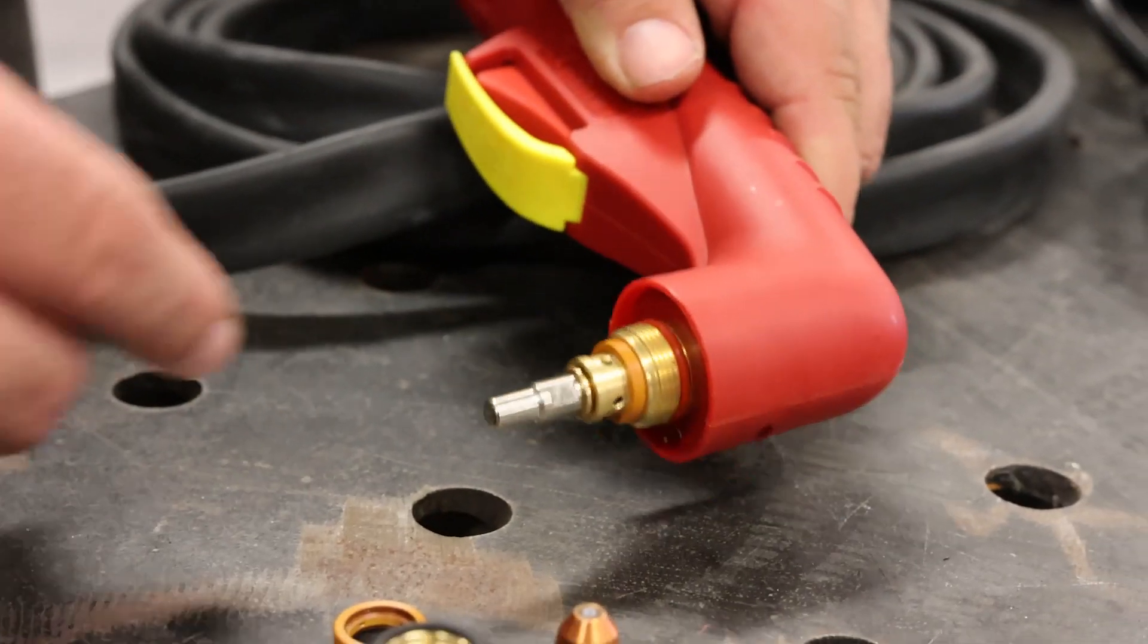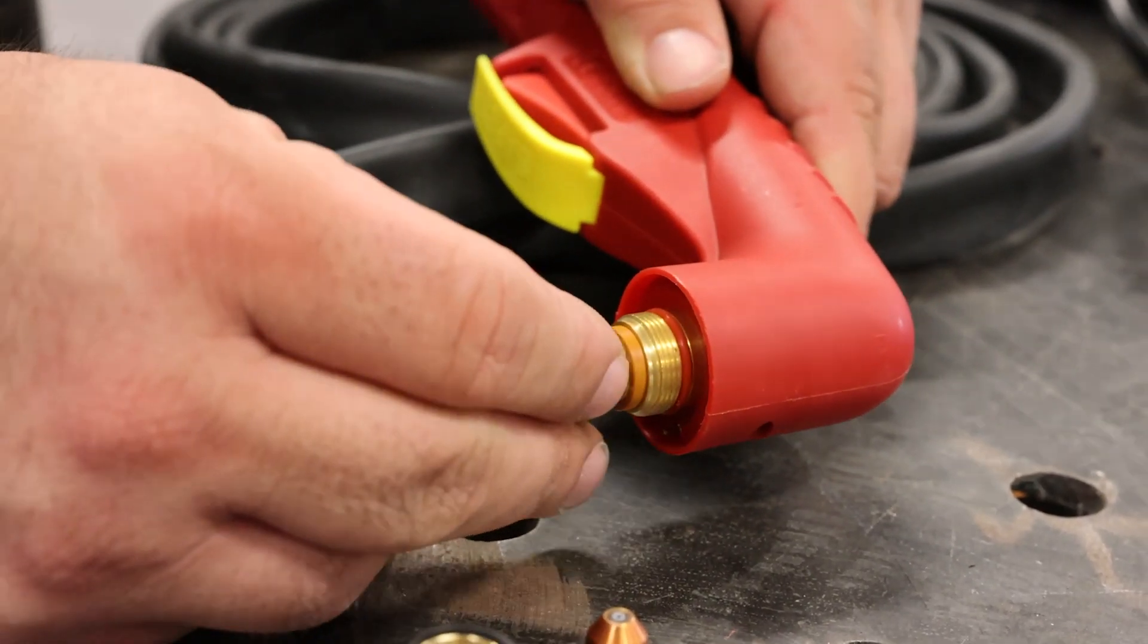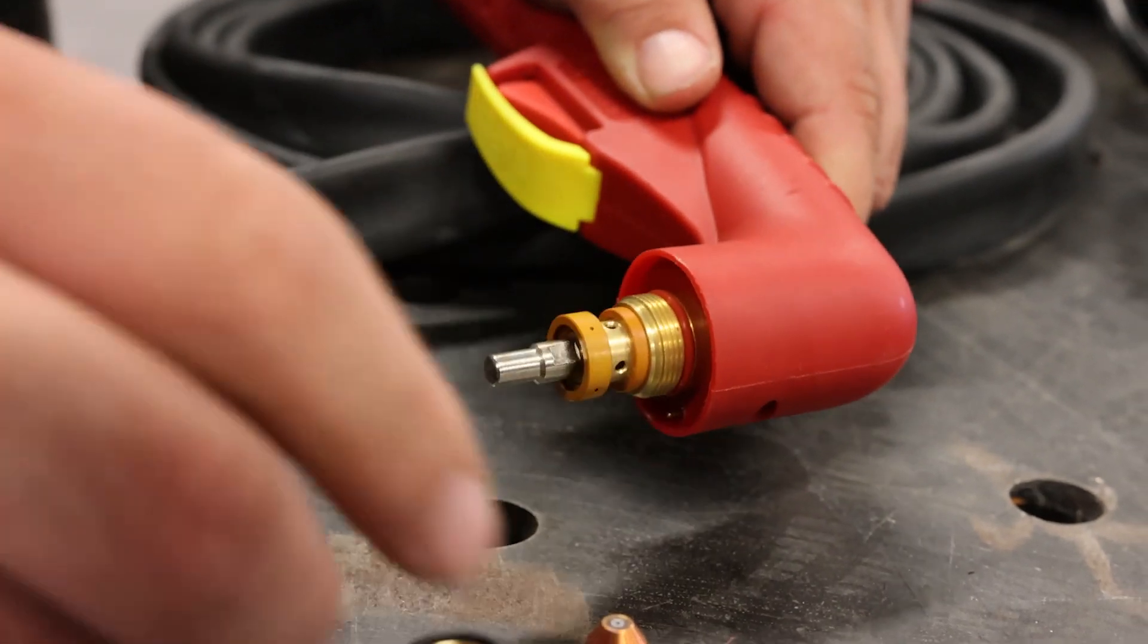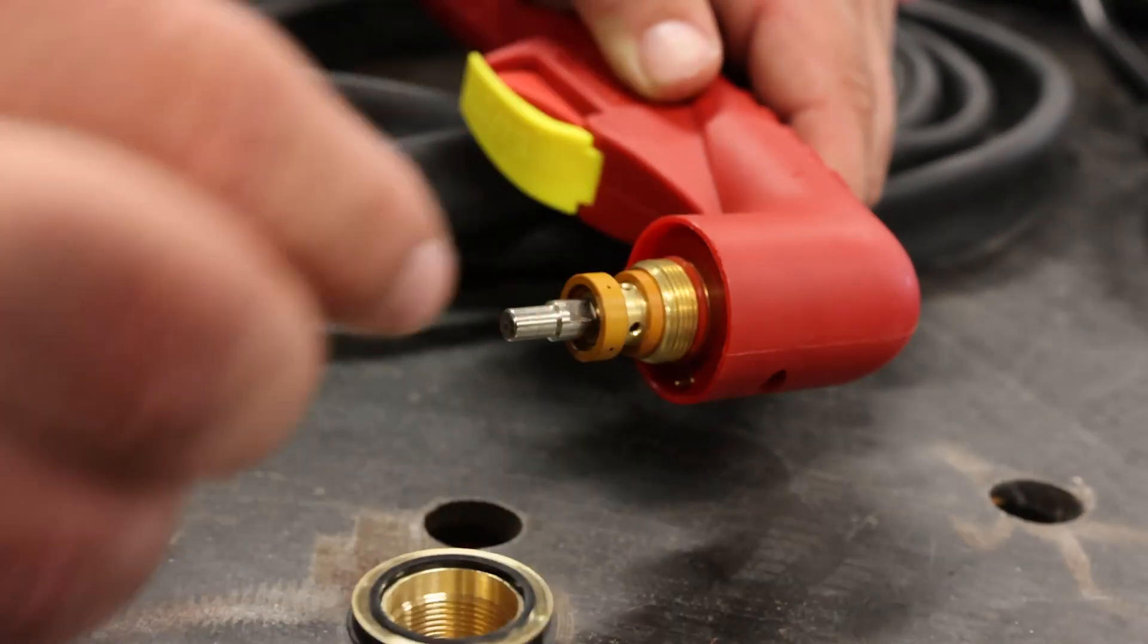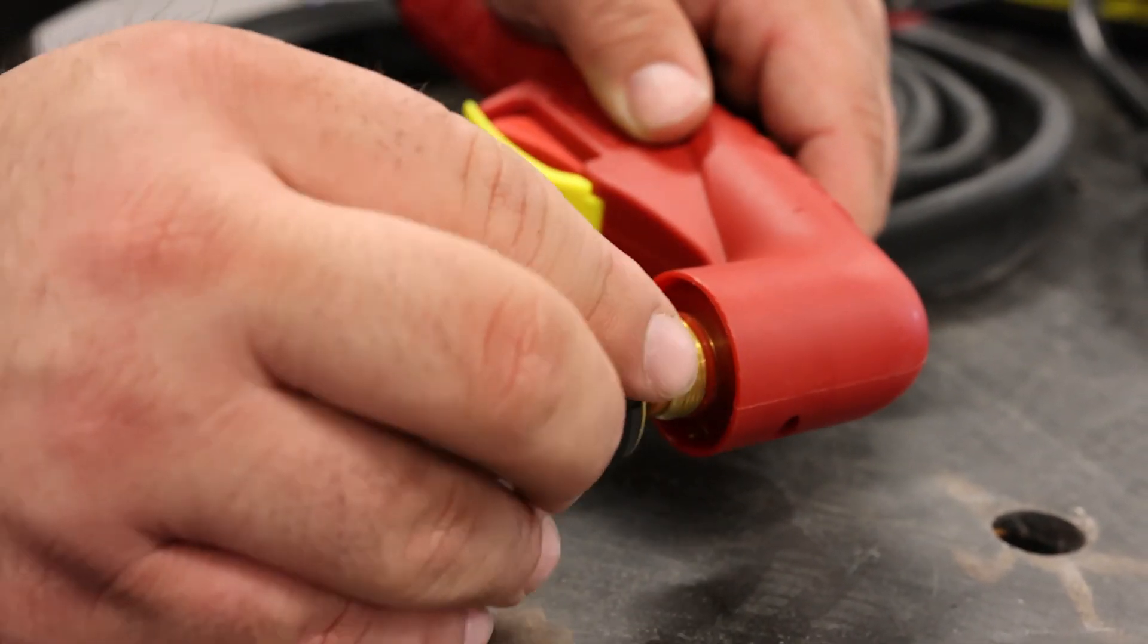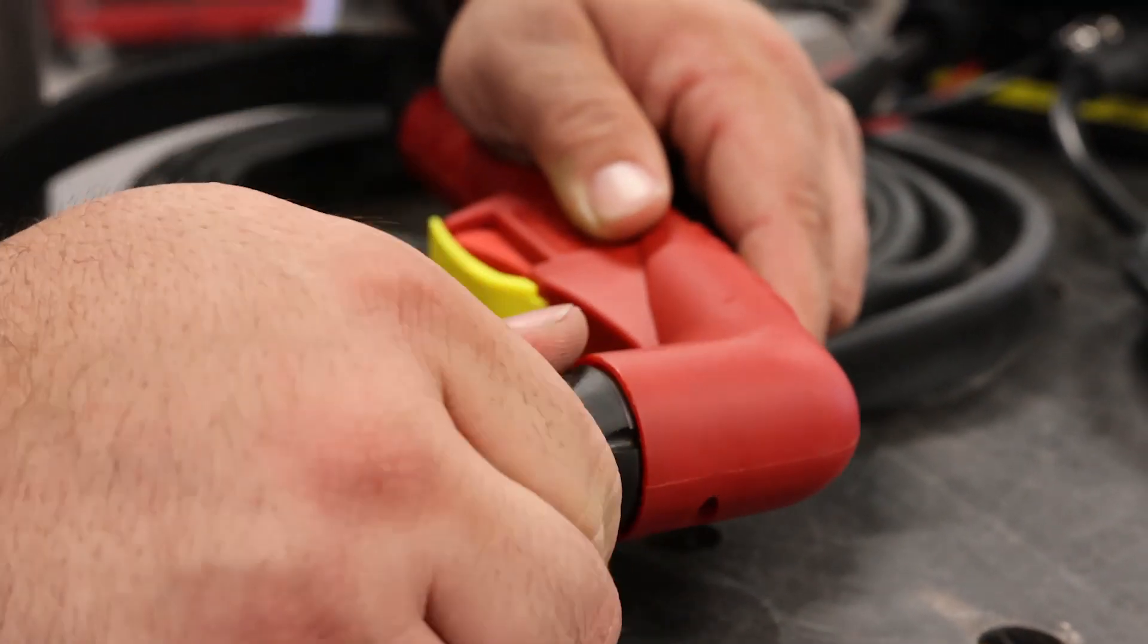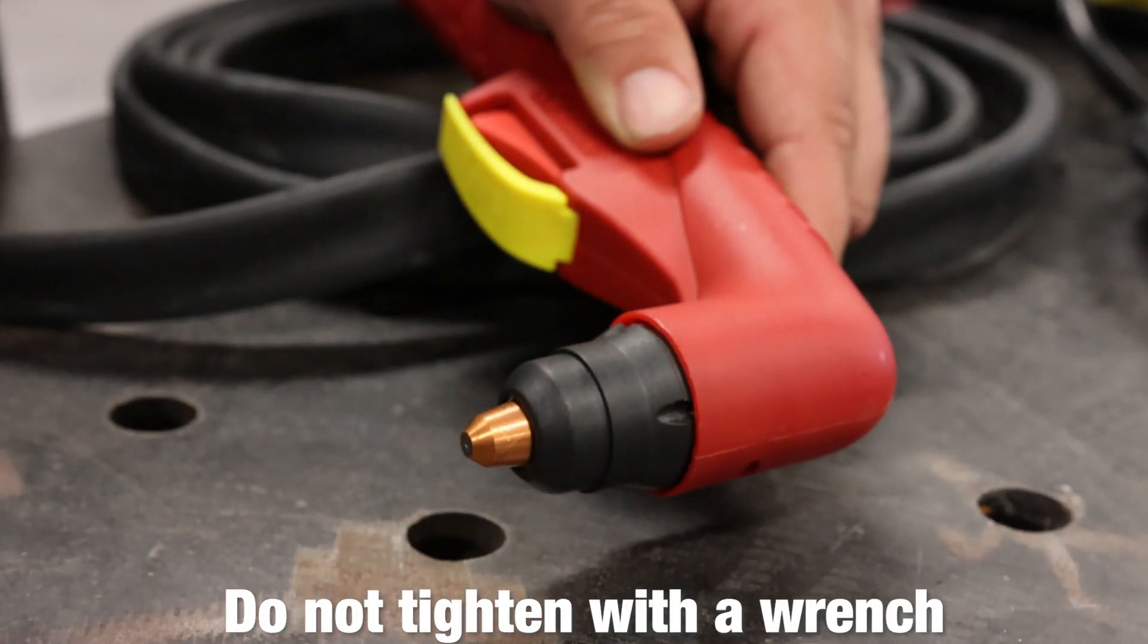Alright, we're going to put it back together. The electrode is nice and tight. Swirl ring goes on first. We're going to flip the cup over. Drop that in there. Set it on there. And again, we're going to make sure it's snug. We're not going to tighten it with a wrench.